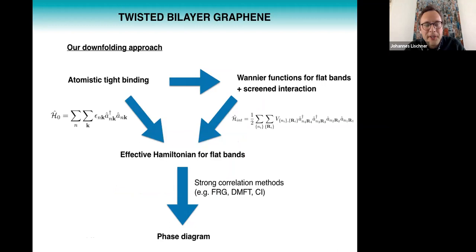To make progress we try to implement this approach that I'll describe now. We start with atomistic tight binding to get the non-interacting band structure of these big unit cells. Then we try to develop an effective interacting Hamiltonian for the flat bands only because those are the interesting degrees of freedom. We do that by generating Wannier functions for the flat bands and then calculating screened interactions for the electrons in the flat bands. Then this resulting effective Hamiltonian only has a few degrees of freedom and can be analyzed using standard strong correlation methods like FRG, DMFT, or CI.